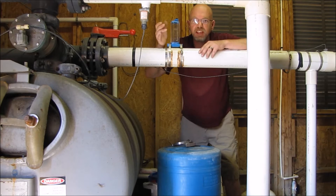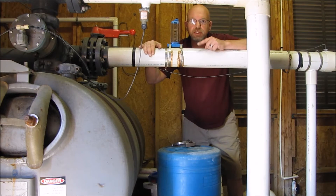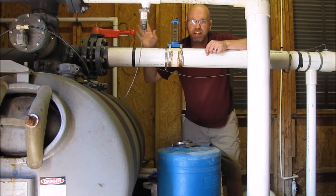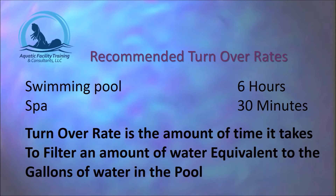This is your flow meter. It tells you how much water is actually moving through the system at any time. We use this to determine whether or not we're meeting the correct turnover rates for the pool. The recommended turnover rate for a swimming pool is once every six hours. For a spa, the recommended turnover rate is once every 30 minutes. Turnover rate is the amount of time it takes to filter an amount of water equivalent to the gallons of water in the pool.